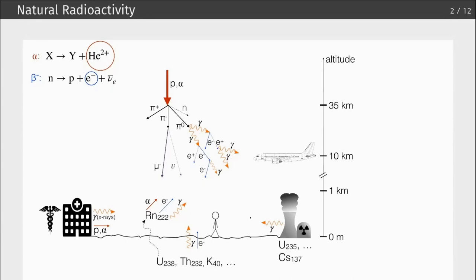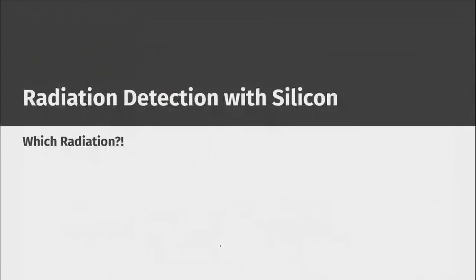On an altitude scale, you can see that an airplane travels through the region where most atmospheric radiation is produced. This is why if you go on such an airplane, you experience several times more radiation than on the ground. On the ground it also depends where you are — different amounts of uranium and thorium occur naturally depending on the local geology.